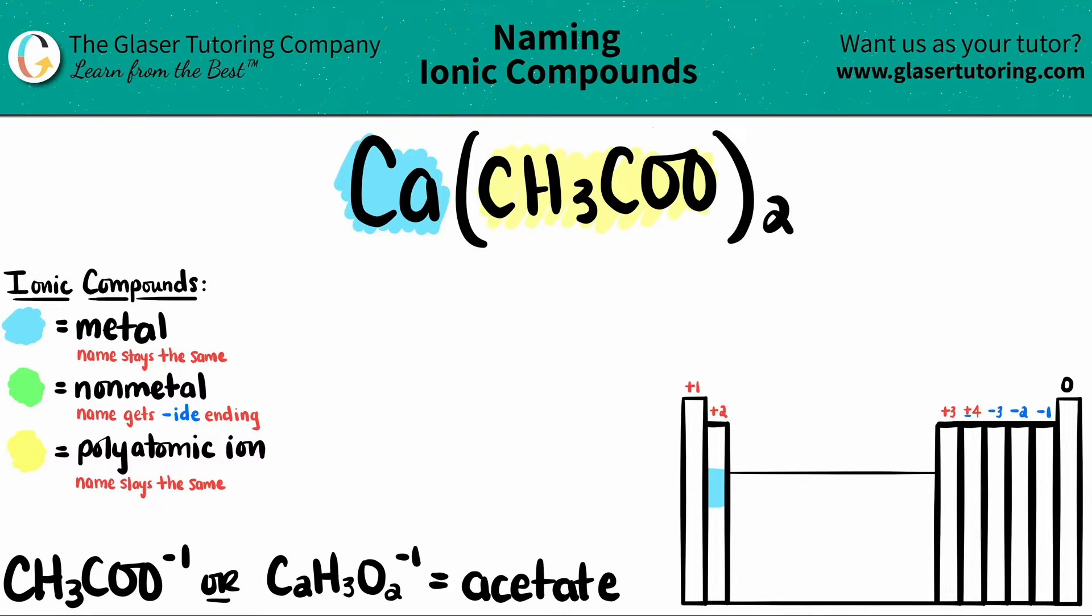Let's start naming. The metal name always goes first and always stays exactly the same. So Ca is just calcium.